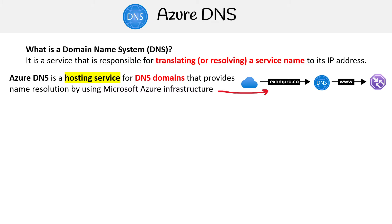Imagine you have a domain you want managed by Azure DNS. You can then make records like www to point to a specific Azure resource. That's the idea behind it.